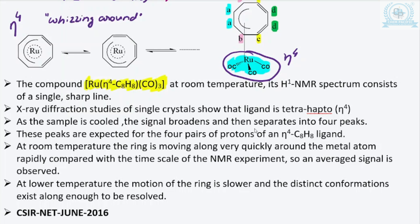X-ray diffraction showed the tetrahapto (eta-4) mode. Yet at room temperature it gave only a single sharp line — a single peak — because of the rapid movement or whizzing of the ruthenium carbonyl group of atoms around the ligand. The ring was moving very quickly around the metal system.